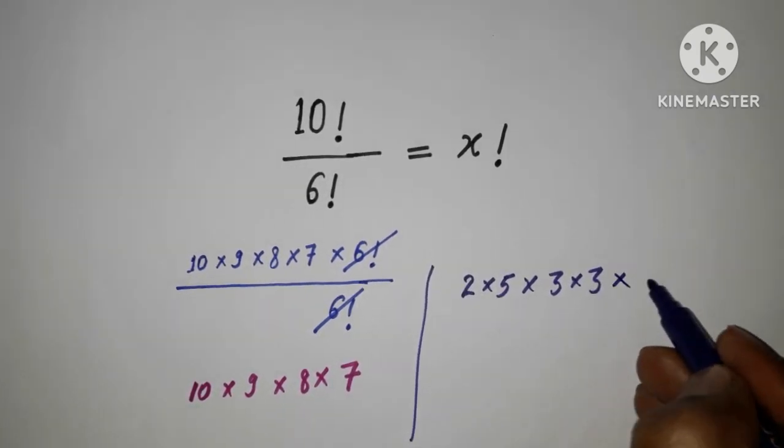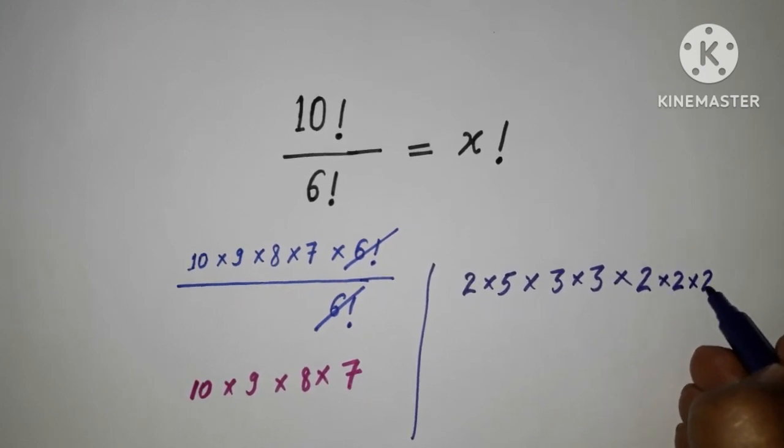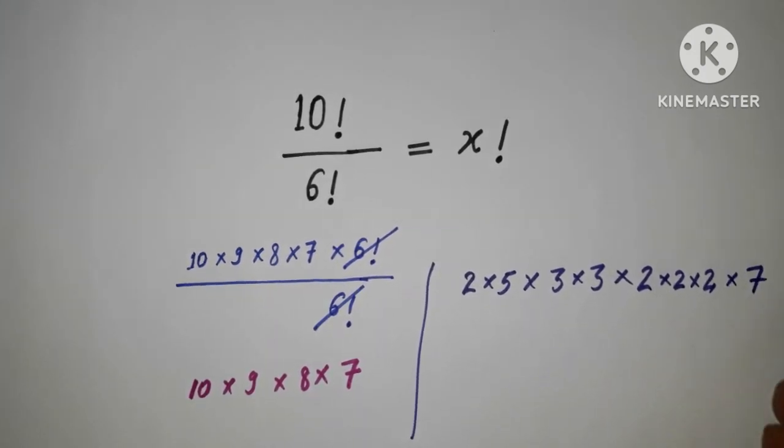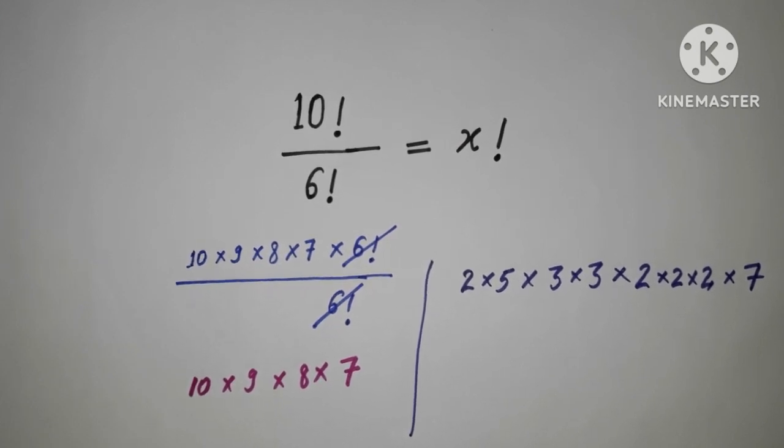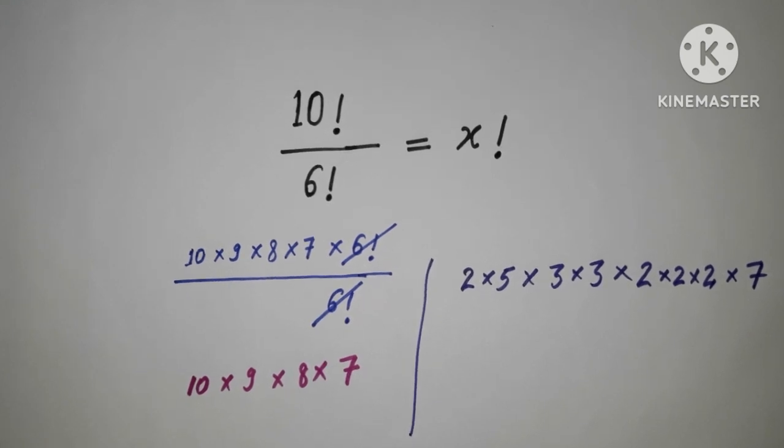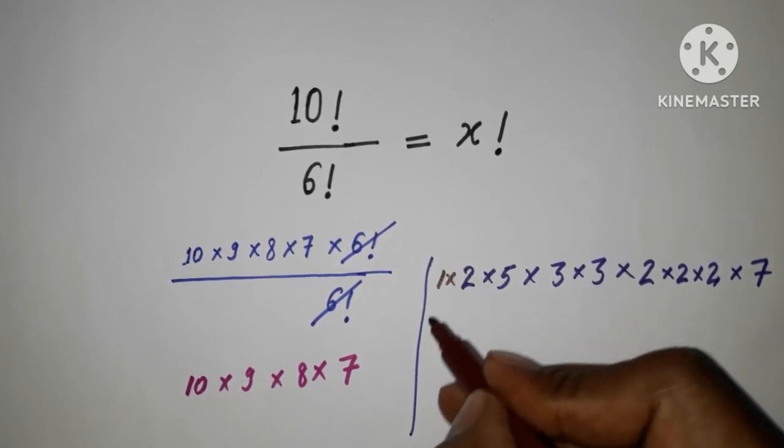I'm getting prime numbers of all. So here it can be written as 2 multiply 2 multiply 2, and 7. I need to make order to get the factorial of all. So what I am going to do, I am just going to write here, if I am writing 1 nothing is going to change.